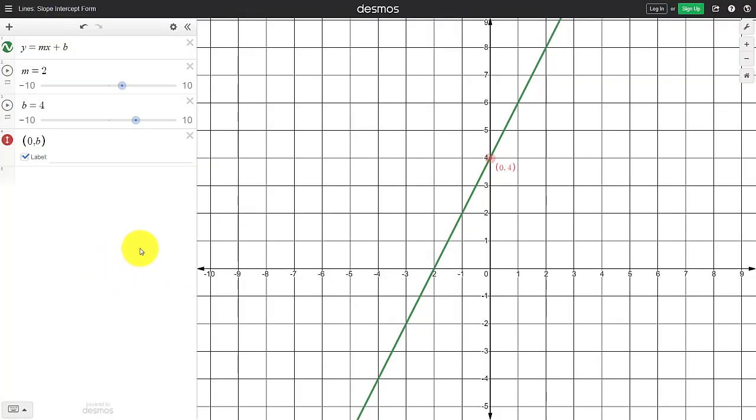Now, let us understand what is the effect of changing m and b on the equation of the line.